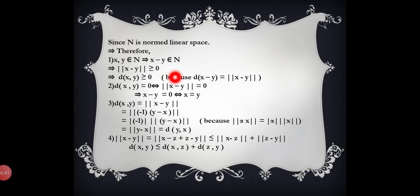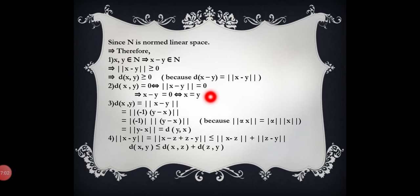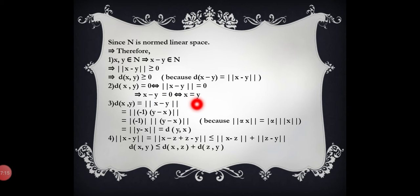Hence ‖x − y‖ ≥ 0, therefore d(x, y) ≥ 0, since d(x, y) = ‖x − y‖. The second property: d(x, y) = 0 if and only if ‖x − y‖ = 0, since d(x, y) = ‖x − y‖. This implies x − y = 0, if and only if x = y.